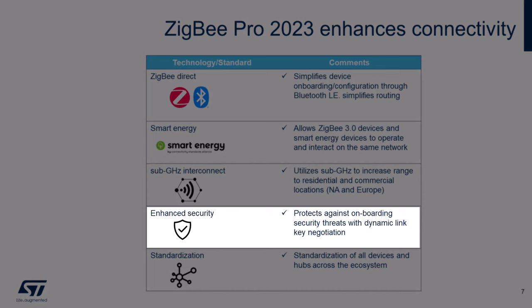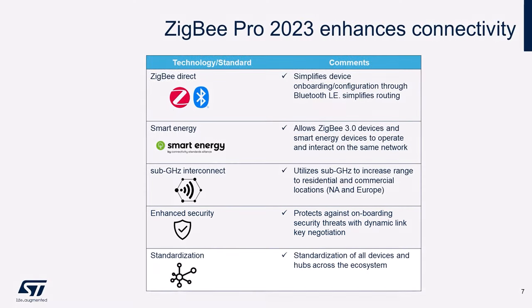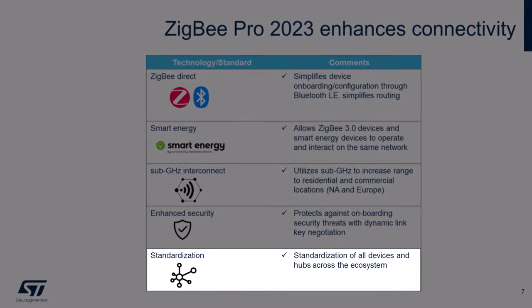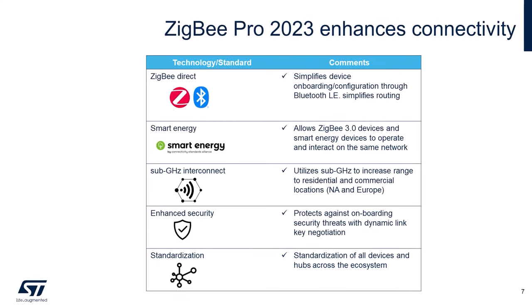ZigBee Pro 2023 addresses modern-day security threats by implementing additional mechanisms to protect the network during onboarding and operation of devices. It introduces security improvements such as dynamic link key, device interview, and restricted mode. It also provides standardization of all devices and hubs across the ecosystem, improving network resiliency on a hub-centric network. ZigBee Pro 2023 is intended for all existing and new market segments, and end-users will benefit from improved security, reliability, resilience, and a simplified user experience.